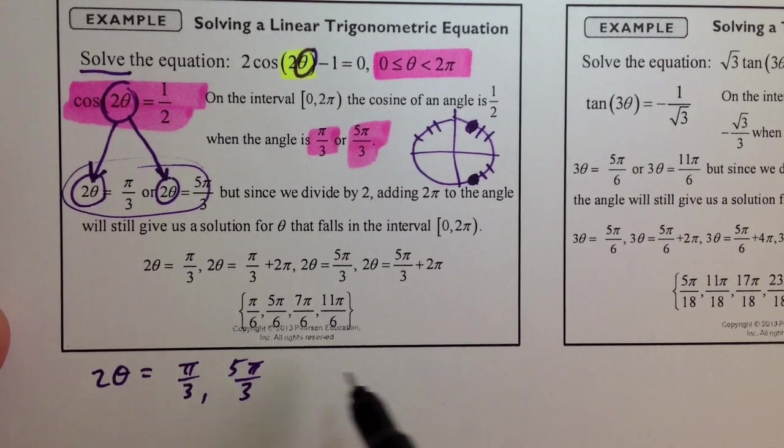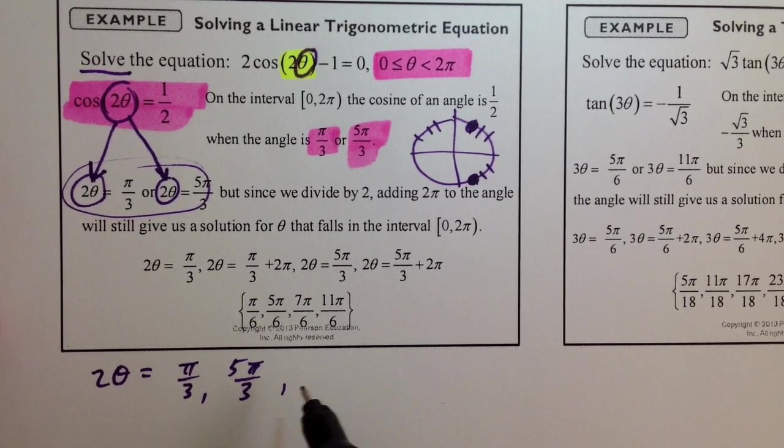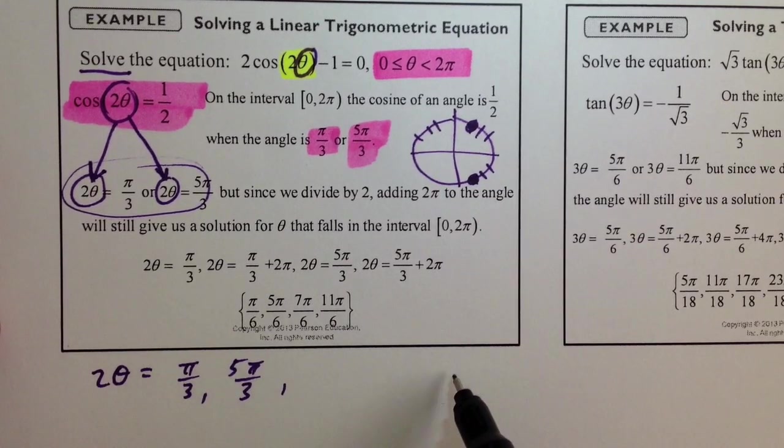When you get a double angle or a triple angle or anything but just the angle, list the first few. Not just first few, but like first 4, 6, 8, whatever, angles, that the cosine of these angles would be equal to 1 half.